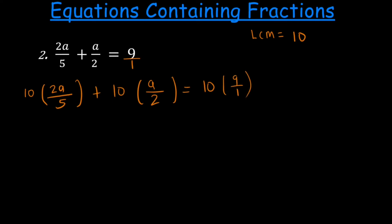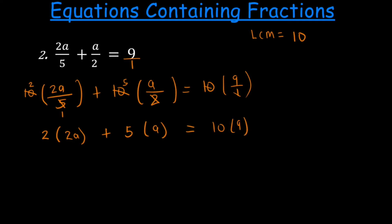We multiply each term by the lowest common multiple and simplify to get rid of the denominators. 5 into 10 leaves 2, 2 into 10 leaves 5, and 1 into 10 leaves 10. Rewriting, we have 2 times 2a plus 5 times a equal to 10 times 9. Expanding: 2 times 2a gives 4a plus 5a equals 90. These are like terms, so 4 plus 5 gives us 9, and we write back our variable a, giving 9a equals 90.